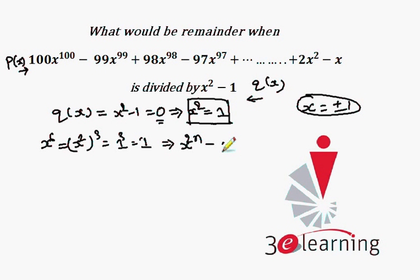Same, x to the 7 is nothing but x squared whole cube times x. For x squared we have 1 from this, cube into x, that implies x. So for an odd power of x, the replacement would be x. When we have an even power, the replacement is 1. When we have an odd power, then replacement is x.